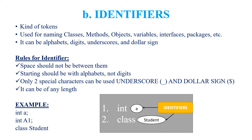The rules to follow are: first, there should not be any space in between them — for example, in A1, there should not be any space between A and 1. Second, the starting of an identifier should be an alphabet; it should not be any number or digit. Third, no special characters are used except underscore and dollar symbols. Fourth, the identifier name can be of any length. Examples are: A in int A, A1 in int A1, and student in class student.